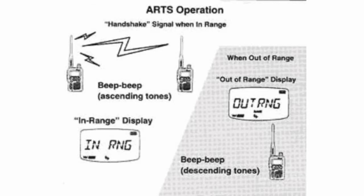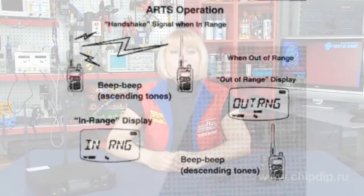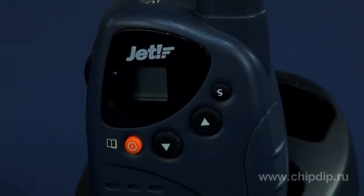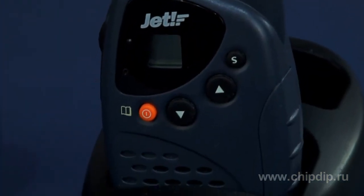If there are other signals on air, the noise reduction device won't open without the code. This function is used in two variants. First, in case you want to hear only your signals on a busy channel with other people talking and you don't want to hear them — in this case you enter the same code and you don't hear the others.